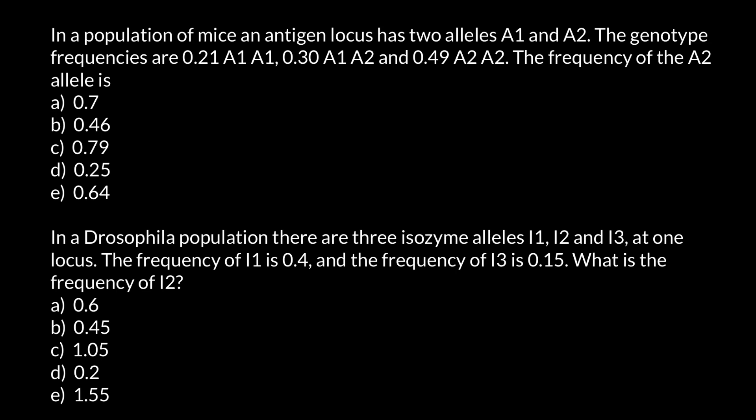So the first question is: In a population of mice, an antigen locus has two alleles A1 and A2. The genotype frequencies are as follows. The homozygous genotype for allele A1 has a frequency of 0.21, the frequency of the heterozygous genotype is 0.30, and the frequency of the genotype which is homozygous for allele A2 is 0.49.